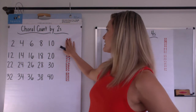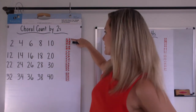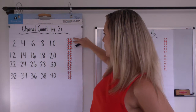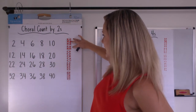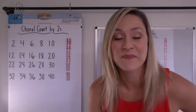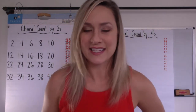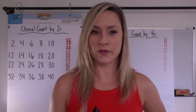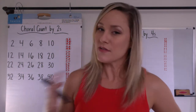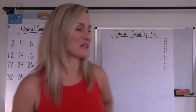So we've got groups of two over here. You can see that's 2, 4, 6, 8, 10, so on. Now let's see what you notice if we do a choral count by four. Twos and fours are very closely related. Let's see if you can catch it.